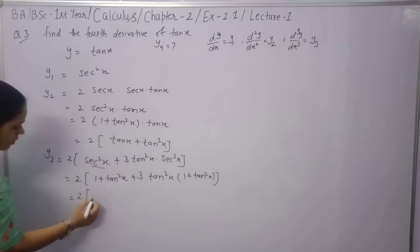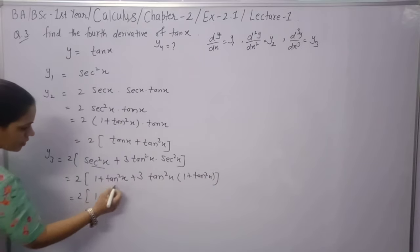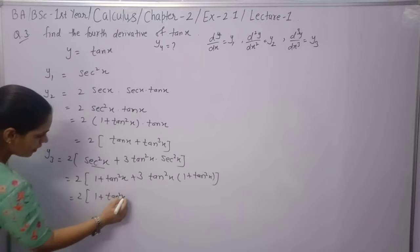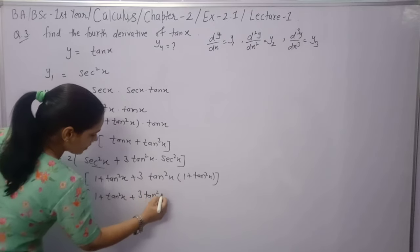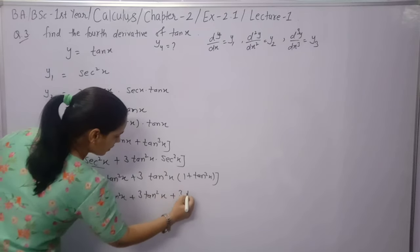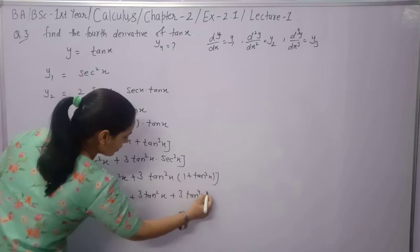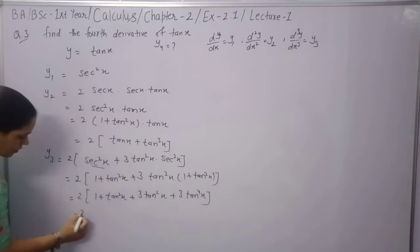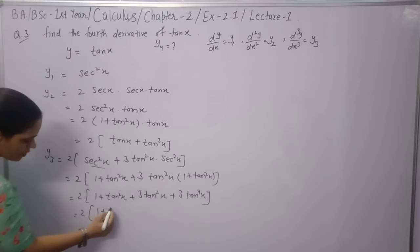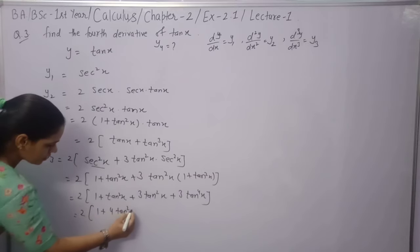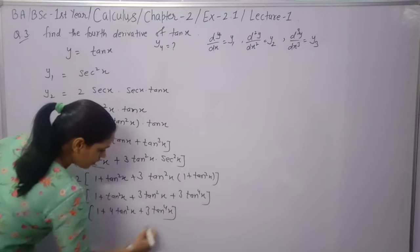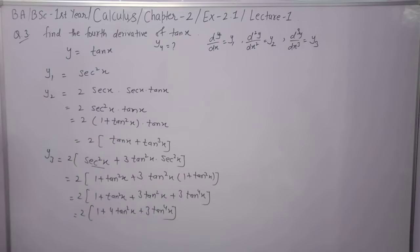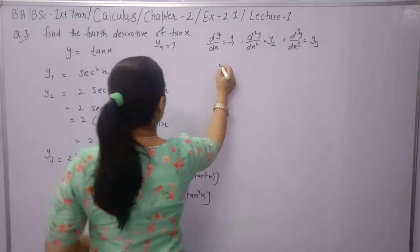Expanding y3: 2 + 2tan²x + 6tan²x + 6tan⁴x = 2(1 + 4tan²x + 3tan⁴x). This is the third derivative expressed in terms of tan(x). Now find the fourth derivative y4.